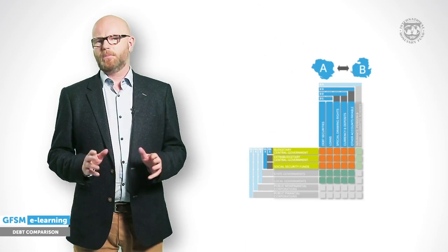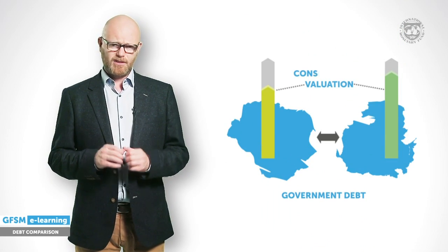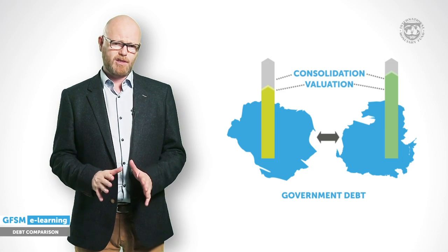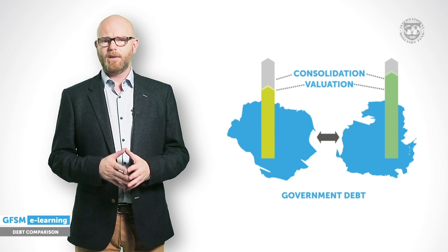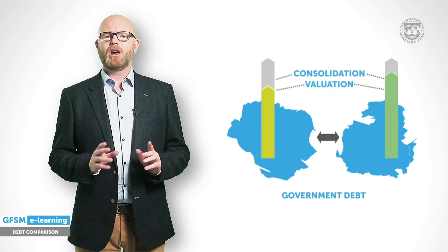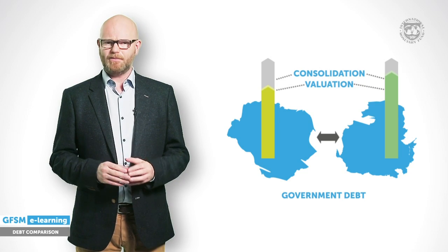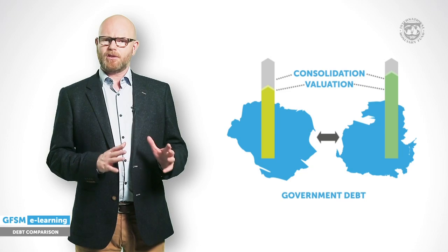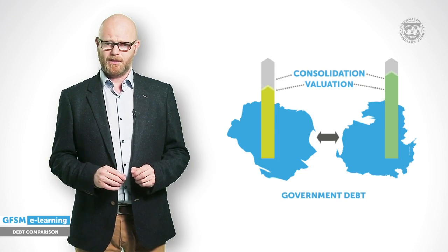Before we close, please note that two further dimensions require consideration: valuation and consolidation. Debt data are most comparable when the same valuation is used — for example, either market, nominal or face value. Furthermore, debt data are most comparable when fully consolidated according to GFSM guidelines. Consolidation nets out government internal debt relations. Also keep in mind that gross and net debt measures should not be confused; the gross debt measure is most often used for comparison purposes.